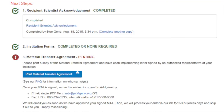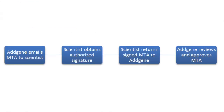If we do not have an MTA coordinator on file for your institution, we will send your MTA directly to you. You can then print out your MTA, have it signed by an authorized representative at your institution, and return the signed MTA to Addgene. Please read the cover page of your MTA for more detailed instructions. The faster your MTA is approved, the sooner we can ship your order.